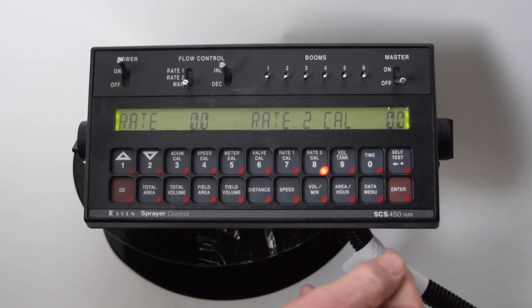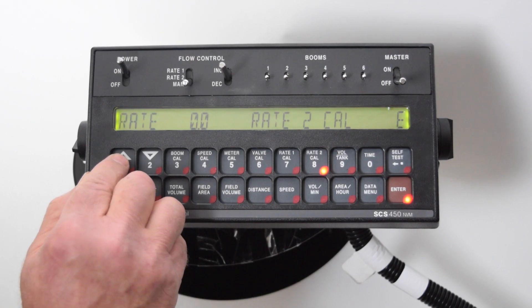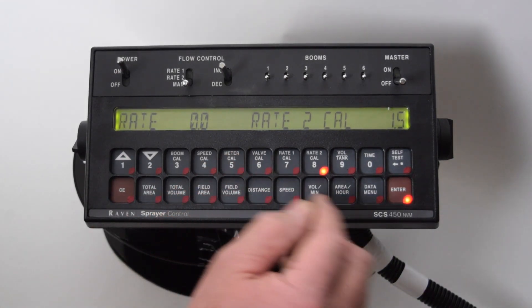And then our second rate, we usually go to 15 gallons per acre. With the decimal, it will be 150.